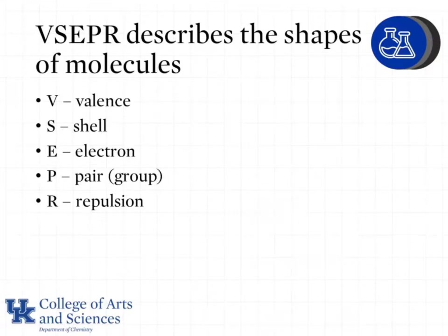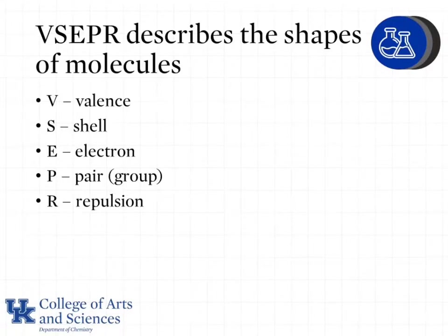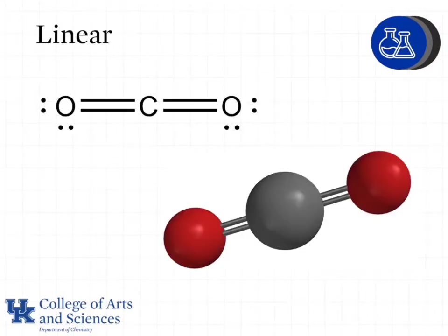This model helps us figure out the three-dimensional shape of a molecule. Lewis structures and skeletal structures tell us about how atoms are connected to one another, but don't show us anything about the 3D shape of the molecule.